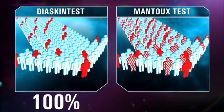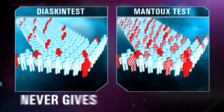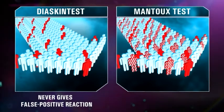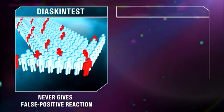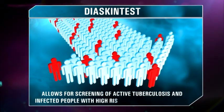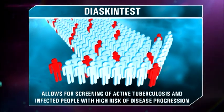Due to high, almost 100% specificity, the Diaskintest does not give false positive reactions in relation to BCG vaccination and sensibilization with non-tuberculosis mycobacteria. It allows for diagnosing active tuberculosis processes with high accuracy, as well as infected persons with high disease risk.